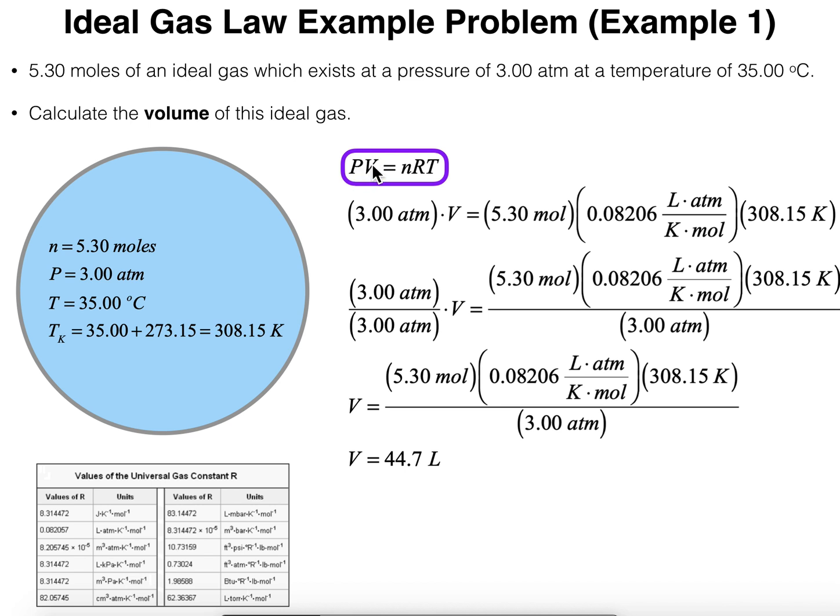Now when you have an ideal gas law problem, you will typically know four of the five variables in this equation, the ideal gas law. Now R is not really a variable, but I'm just calling that a variable for simplicity purposes. So you'll know four of these five things. Let's think about the four that we know based on the information given in this problem.